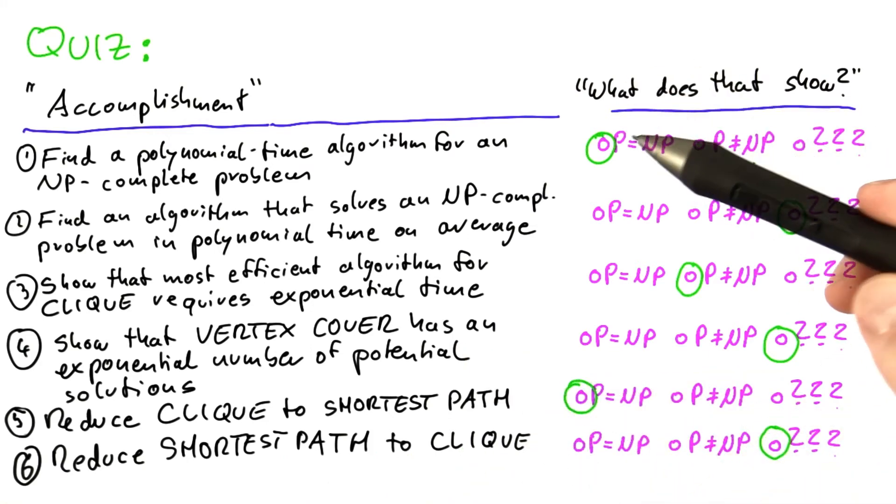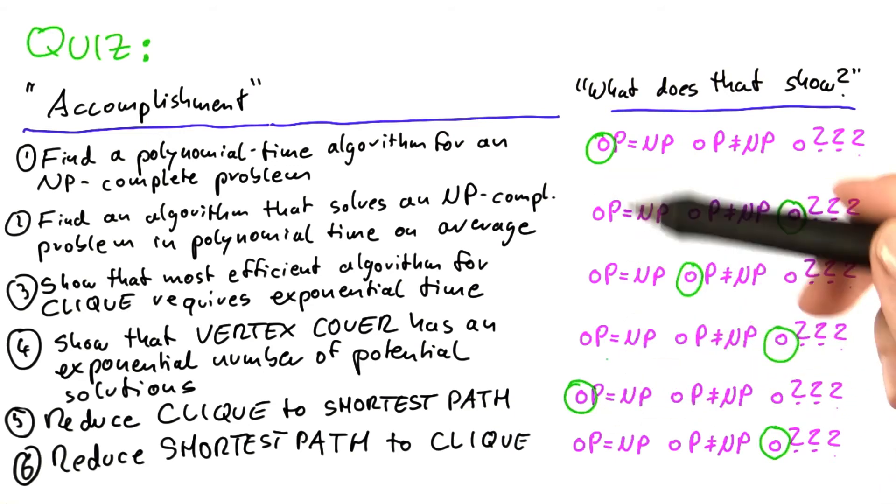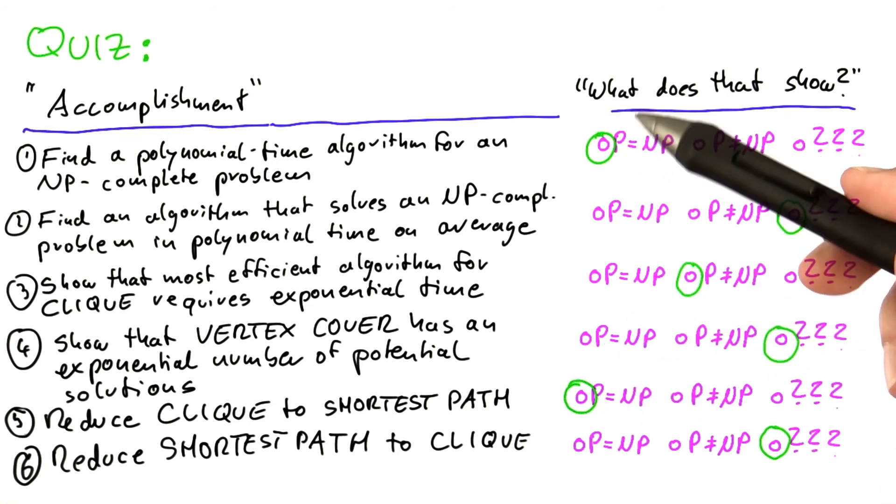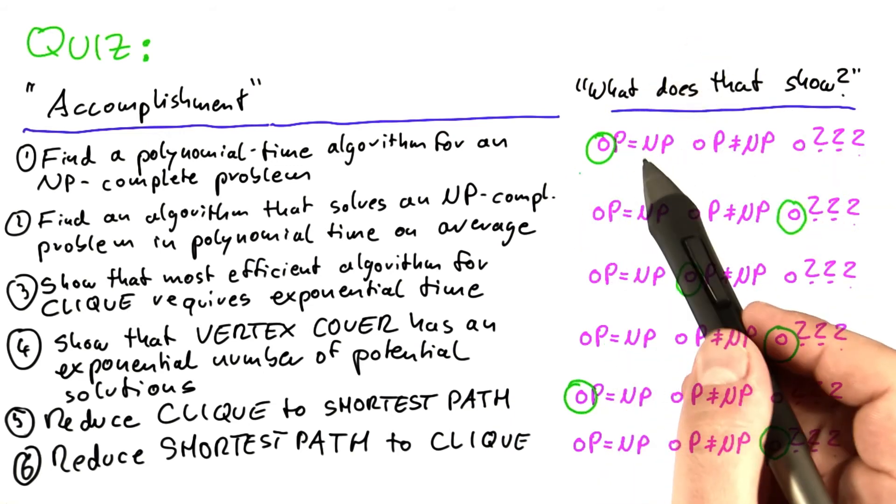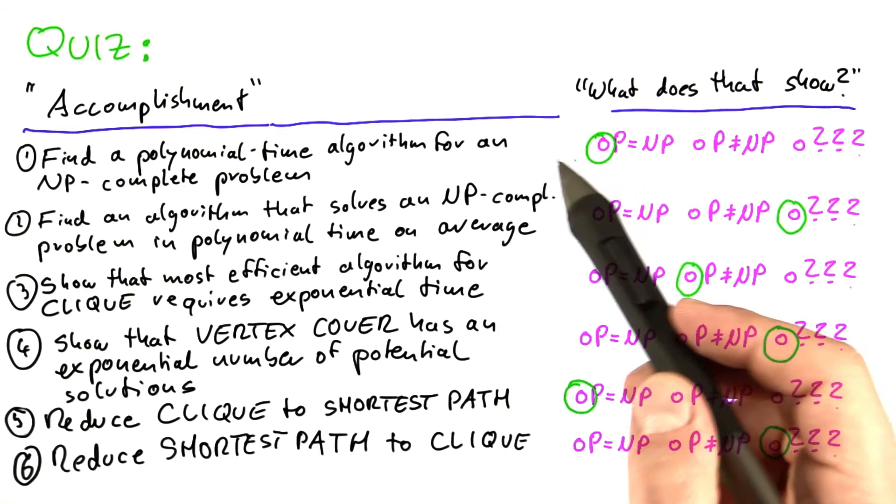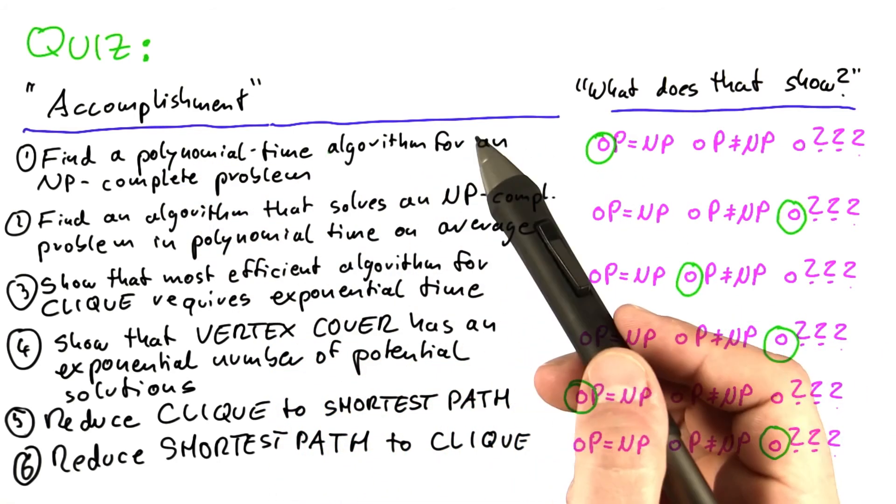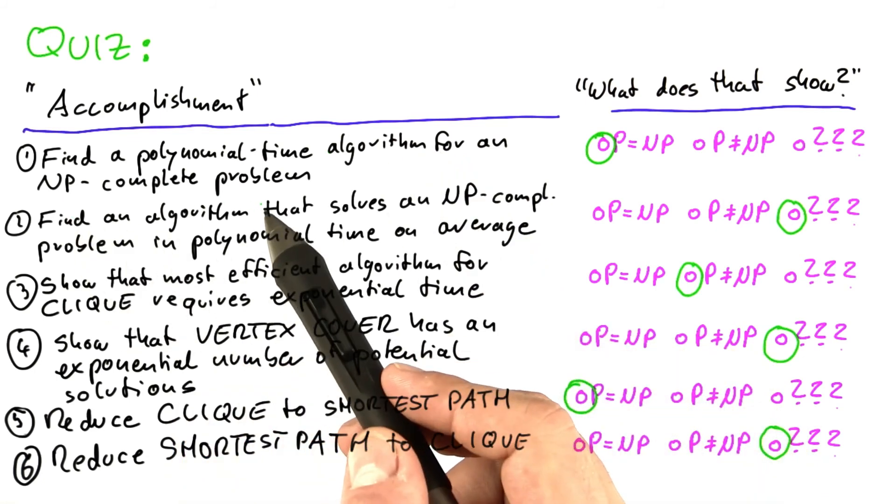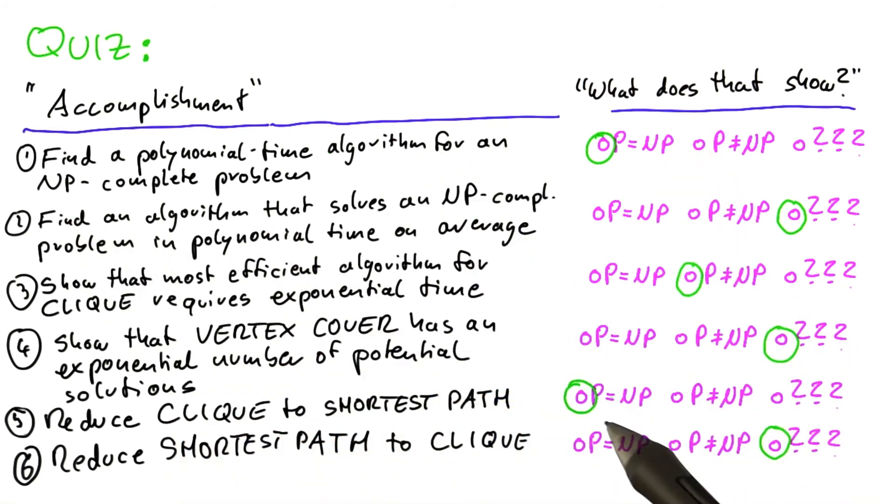Now, if you look at all these solutions, well, of course, it's a bit of a subjective selection here, but what you see is that showing that P equals NP in a way would be quite easy. All you have to do is find one single polynomial time algorithm for an NP-complete problem. Then you have immediately shown that P equals NP.